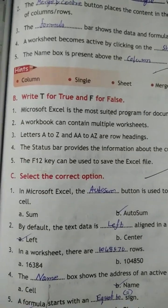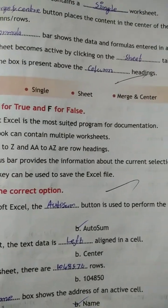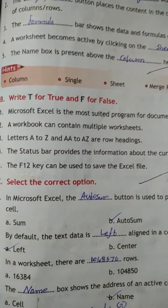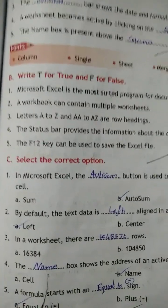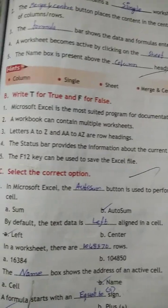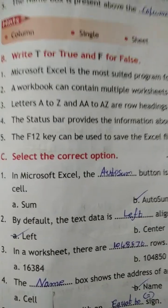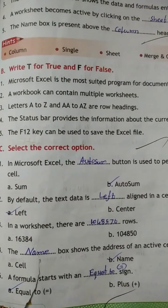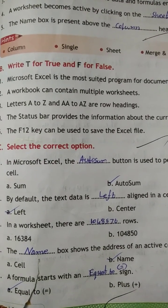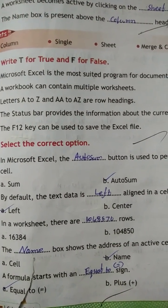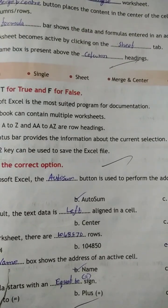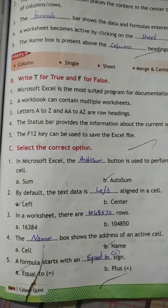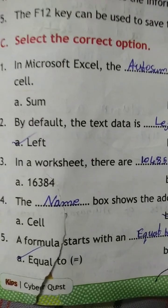Choose the correct option: In Microsoft Excel, the Auto Sum button is used to perform addition of a cell range. By default, text data is left-aligned in a cell. In a worksheet there are 1,048,576 rows. The Name Box shows the address of an active cell. A formula starts with an equal-to sign.